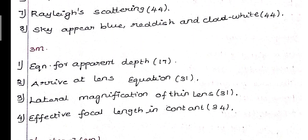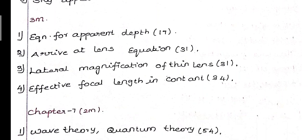Chapter 6 Ray Optics 3-mark questions: 1st question - equation for apparent depth, page number 17. 2nd question - thin lens equation, page 31. 3rd question - lateral magnification of thin lens, page number 31. 4th question - effective focal length in contact, page number 34.